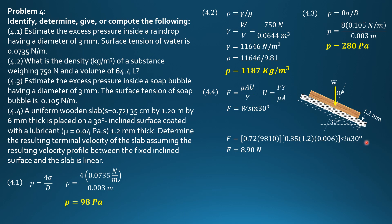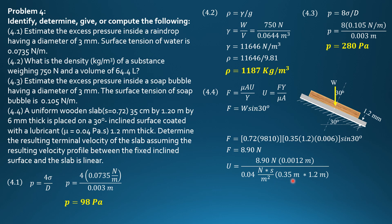Substituting, because everything is known: the area in contact is 0.35 times 1.2 meters, and the thickness of the wood is 6 mm. So, U equals 8.9 times Y, which is 0.0012 meter — the thickness of the coating — over viscosity 0.04 Ns per meter squared, or Pascal-seconds, times the contact area of 0.35 meter by 1.2 meter. The 0.35 meter is perpendicular to the screen and 1.2 meters is the longer dimension. Canceling units of Ns, the resulting unit is meter per second. So, U is 0.6357 meters per second.